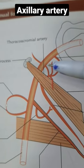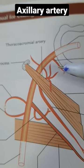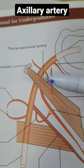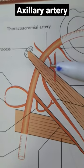It has six branches. The first branch from the first part is the superior thoracic artery. The second part gives two branches: the thoracoacromial artery, which is further divided into four branches.